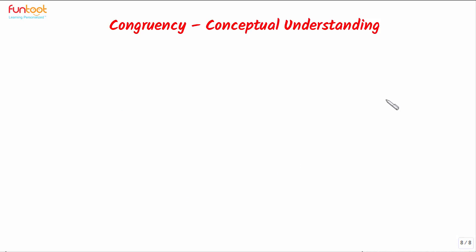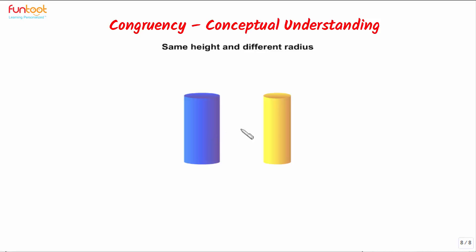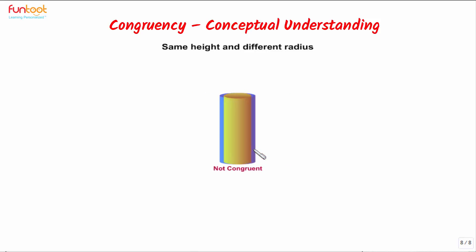Let's consider some pairs of cylinders and see how they look when placed in front of one another. Here we have two cylinders of different sizes — they have the same height but different radii. The radius of one cylinder is lesser than the radius of the other. When the cylinder of lesser radius is kept in front of the cylinder with larger radius, we can see both cylinders because their sizes are not the same, and hence the cylinders are not congruent.